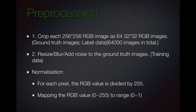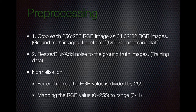For the preprocessing part, I crop each image as 64x64 RGB images. I regard them as ground truth images, which are also called labeled data. Finally, I have 64,000 images in total. Then I resize, blur, and add noise to the ground truth images to generate training data. For normalization, for each pixel the RGB value is divided by 255, mapping the RGB value to the range 0 to 1.